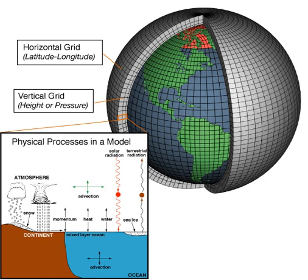Spectral models generally use a Gaussian grid because of the mathematics of transformation between spectral and grid point space. Typical AGCM resolutions are between 1 and 5 degrees in latitude or longitude. HadCM3, for example, uses 3.75 degrees in longitude and 2.5 degrees in latitude, giving a grid of 96 by 73 points for some variables, and has 19 vertical levels, resulting in approximately 500,000 basic variables since each grid point has 4 variables. HADGM1 uses a grid of 1.875 degrees in longitude and 1.25 in latitude in the atmosphere. A high-resolution variant uses 1.25 by 0.83 degrees respectively. These resolutions are lower than those typically used for weather forecasting.